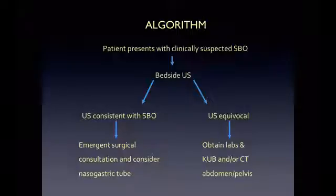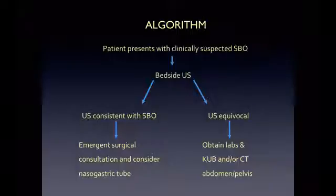The algorithm for patients presenting with suspected SBO is as follows. For a patient presenting with acute abdominal pain, peritonitis, abdominal distension or mass, and persistent nausea or vomiting, you are going to want to obtain a bedside ultrasound looking for SBO. If your ultrasound is consistent with SBO, get an emergent surgical consult and consider placing a nasogastric tube. If your ultrasound is equivocal, obtain an abdominal x-ray. Then if this test is also non-diagnostic, obtain a CT of the abdomen and pelvis.